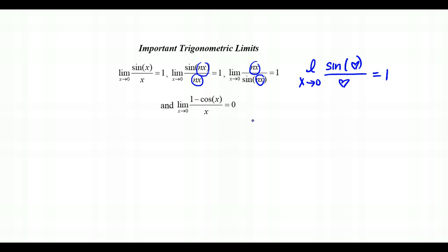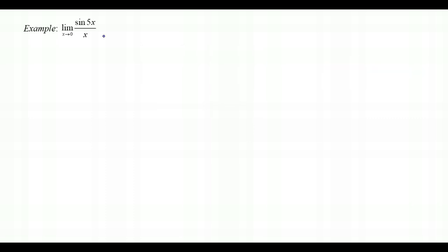Let's look at the first example: the limit as x approaches 0 of sin(5x) over x. We almost have the trig limit property, but we need the same expression in both numerator and denominator. They share an x but differ by a factor of 5, so we'll employ a small trick.